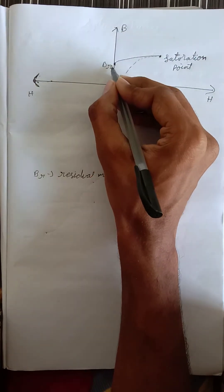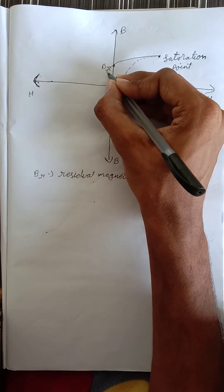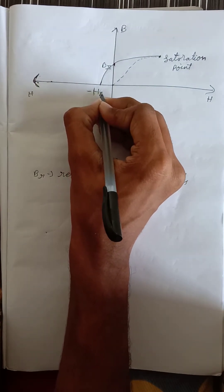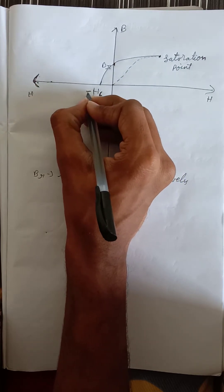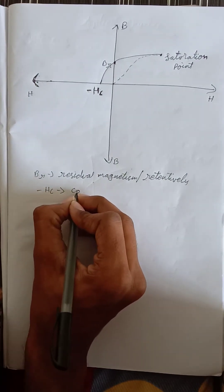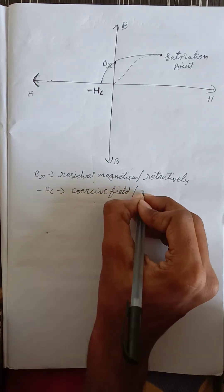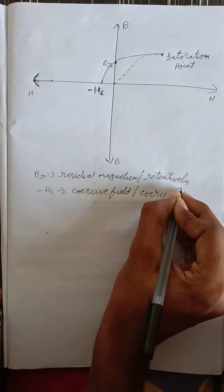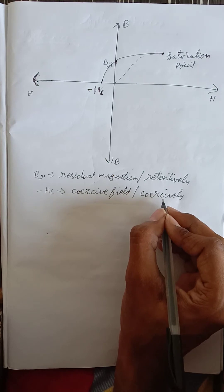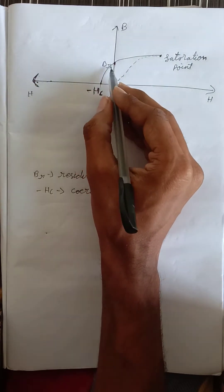Now, to reduce the residual magnetism to zero, we apply a negative magnetic field on the material. After that, it magnetizes and reaches a point represented as minus HC, where H is the magnetic field intensity coordinate and it is a negative coordinate, so we call it minus HC. Minus HC is called the coercive field or coercivity. Coercivity means the amount of magnetic intensity required to reduce the residual magnetism to zero.